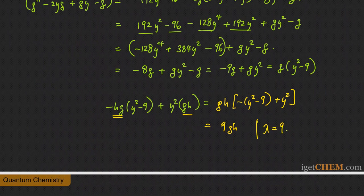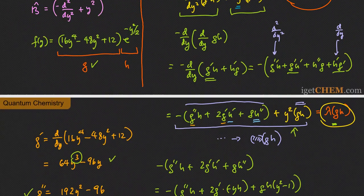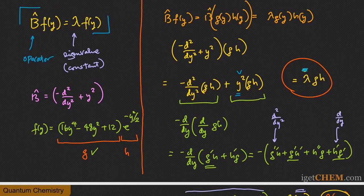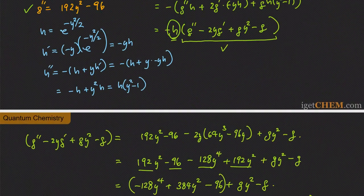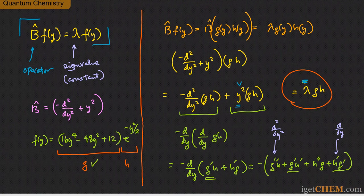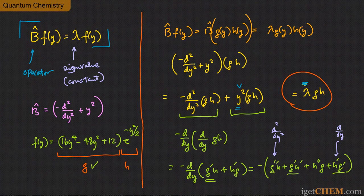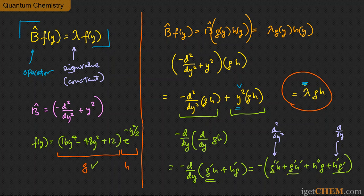After all that mathematics, we have shown that this function is indeed an eigenfunction of the given operator, and the eigenvalue is 9. I hope this illustrates how organizing your mathematics — focusing on the goal and factoring appropriately — helps you reach the answer more efficiently. This is the full solution. We will next explore fundamental concepts of the quantum realm before moving to specific models of quantum mechanics. Please subscribe to the channel to be notified when those videos come out.